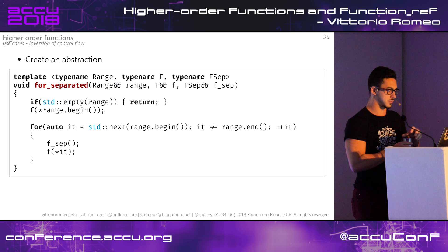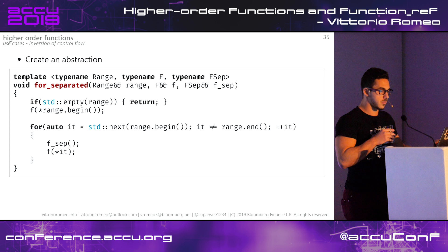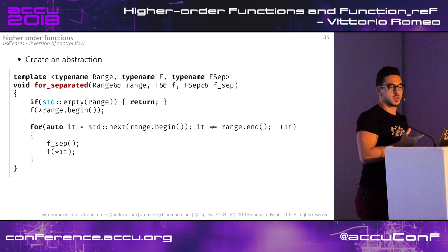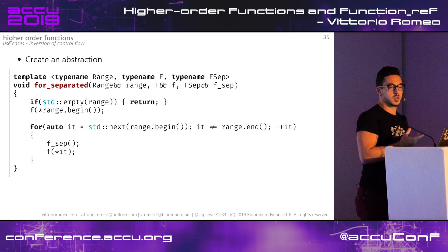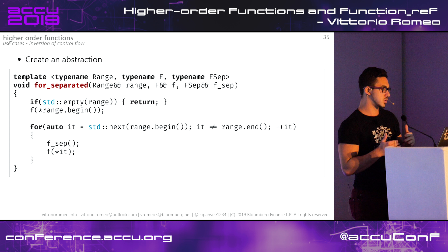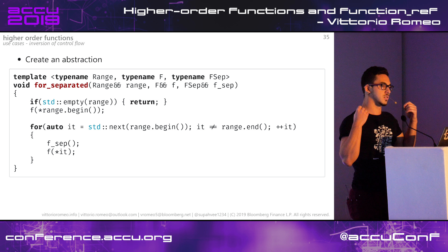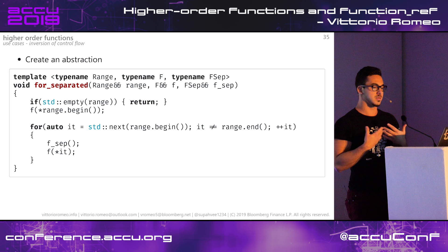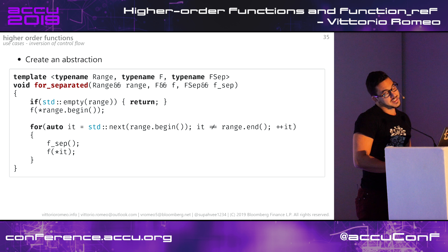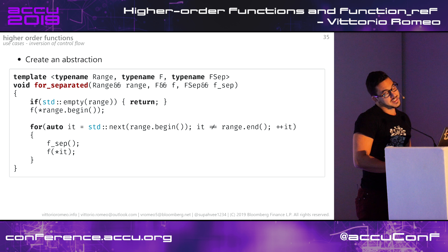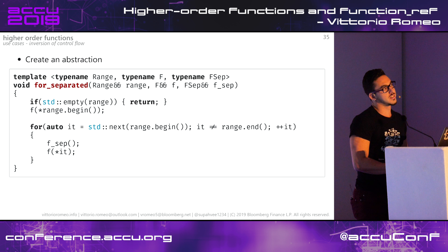An audience member questions the name 'for_separated', pointing out that 'for' reveals the implementation rather than the intent. The speaker acknowledges the naming challenge - the intent was 'for each element in this range separated by something.' The audience suggests alternatives like 'join' or 'merge'. The speaker concedes naming is the hard part and the name could be better.